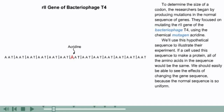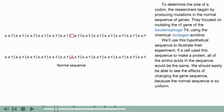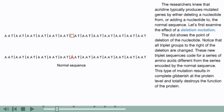If a cell used this sequence to make a protein, all of the amino acids in the sequence would be the same. We should easily be able to see the effects of changing the gene sequence because the normal sequence is so uniform. The researchers knew that acridine typically produces mutated genes by either deleting a nucleotide from or adding a nucleotide to the normal sequence.